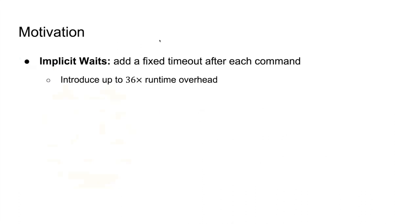To fix such flakiness, the simplest method is adding implicit waits, where a fixed timeout is inserted after each command to ensure all mutations on UI elements complete before the subsequent commands. However, our experiments show that it can introduce up to 36 times runtime overhead.